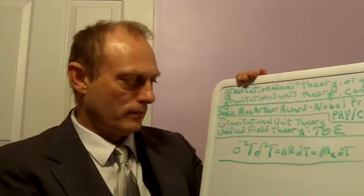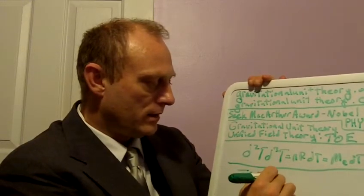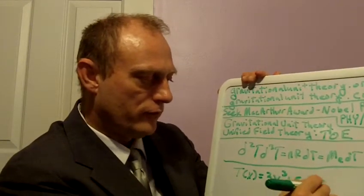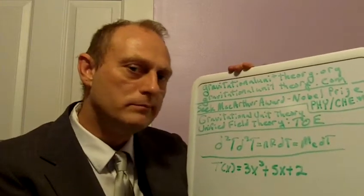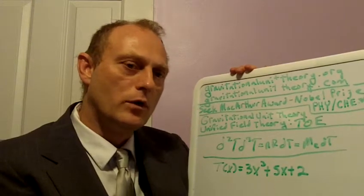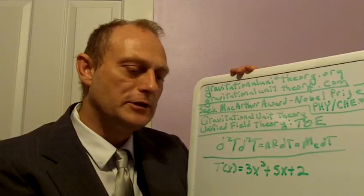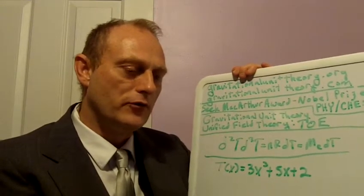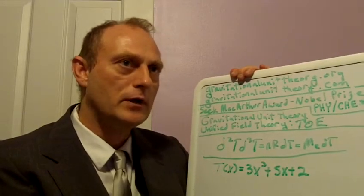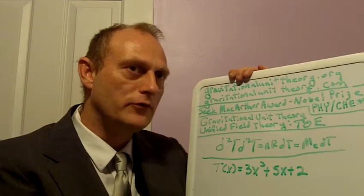So let's begin. Let's use t of x equal to 3x cubed plus 5x plus 2 as an example. I use this example because it gives an absolutely 100% correct result to nine digits past a decimal as far as the standard deviation goes. Because of one of the little mathematical tricks I use in my work to simplify the mathematics, there is some deviation associated with the work in some instances.